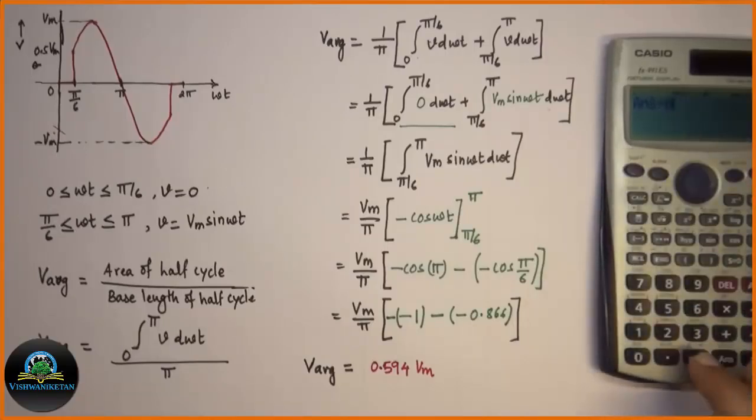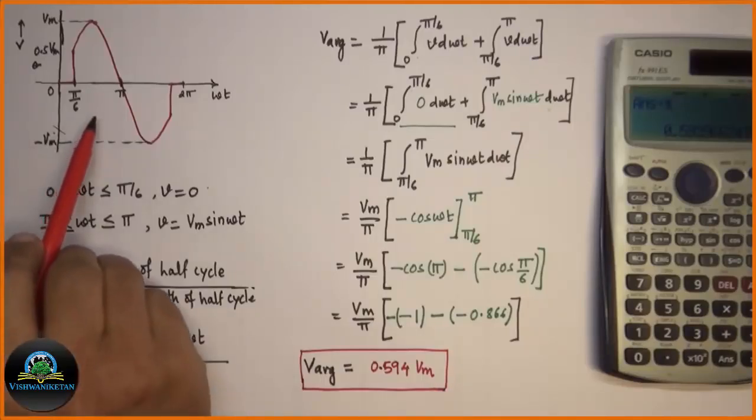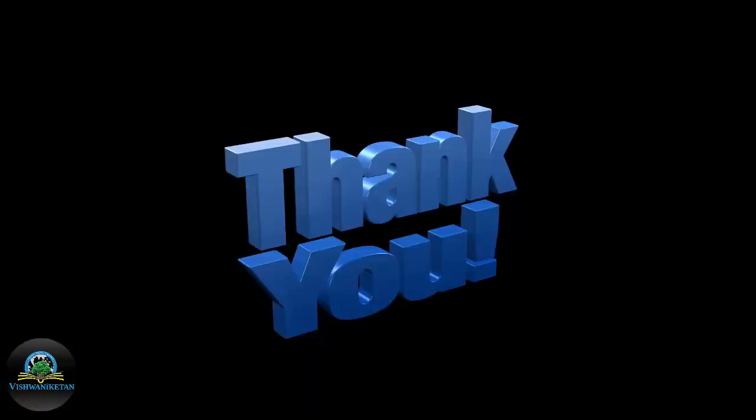That I get 0.594 Vm which is the answer of our problem. Hence for the given waveform I will get value of average voltage to be equal to 0.594 times maximum value. Thank you for watching this video.